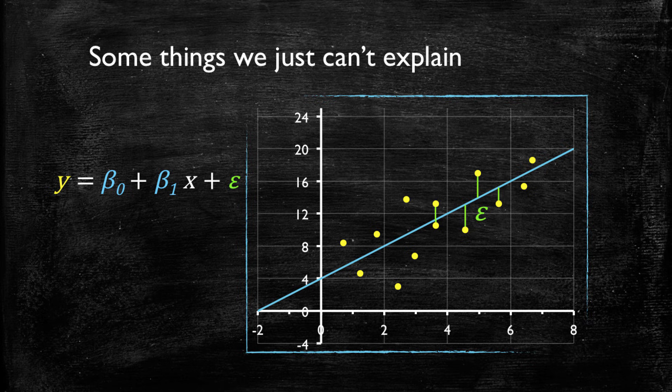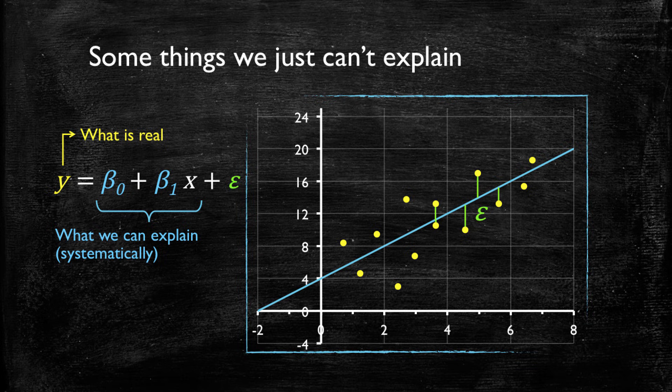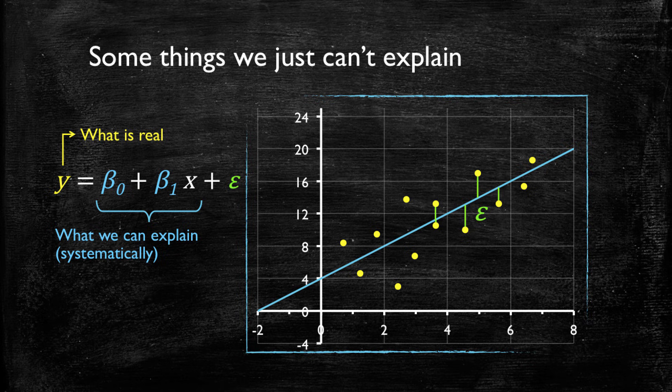So what we have here is a Y that represents that which is real. There's a model that systematically explains the variation in Y, meaning that we're using the variation in X to explain variation in Y. But there's also a portion of the variation that we cannot explain that is expressed in the error term.